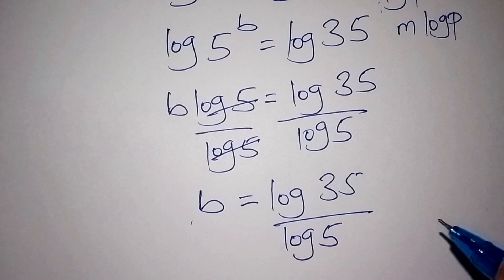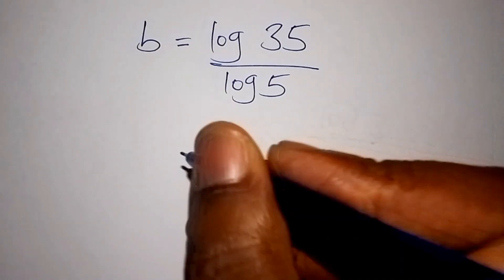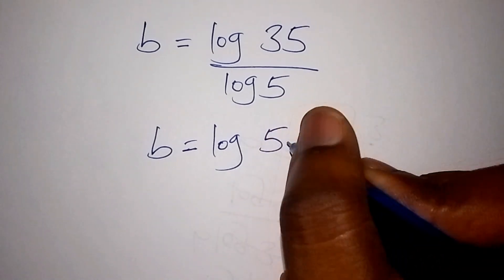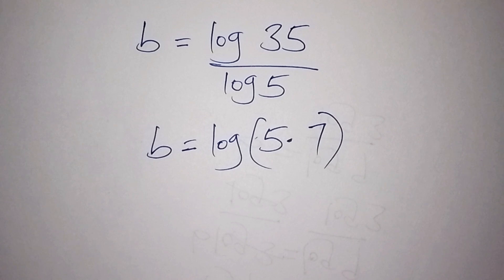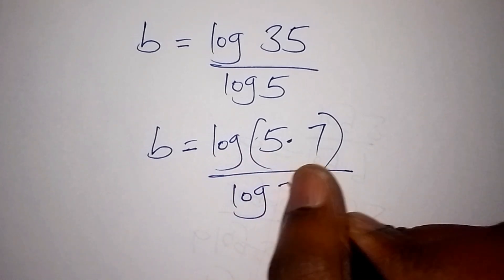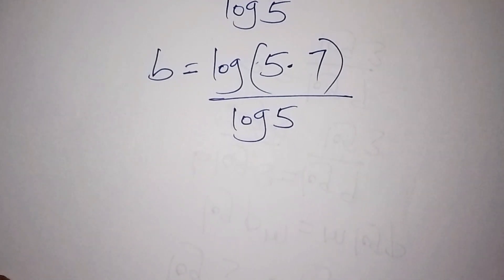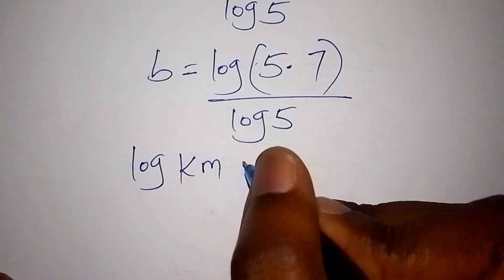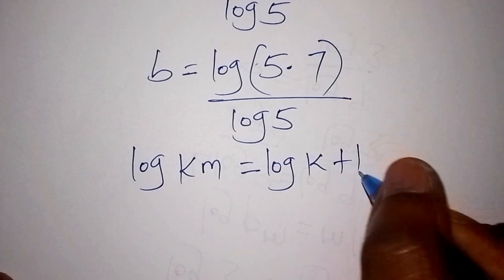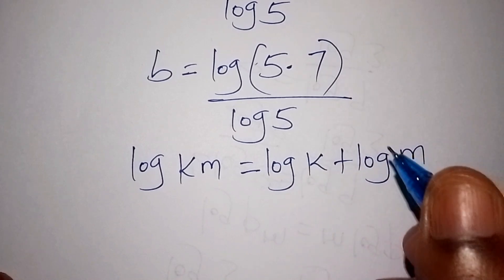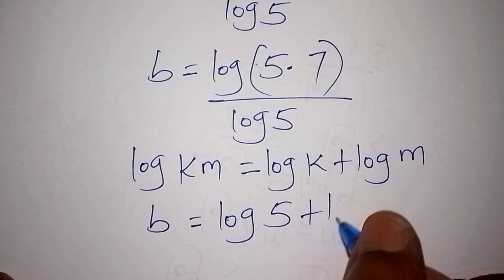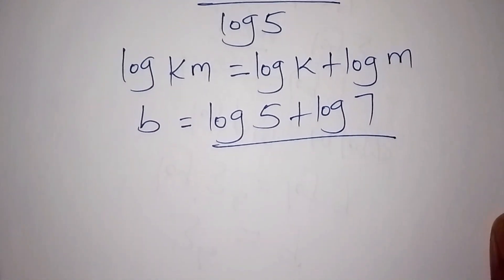We don't stop here because we shall still factorize the log of 35 all over the log of 5. So b can also be written as: when we factorize the log of 35, we shall have the log of 5 multiplied by 7, closed in a bracket, all over the log of 5. We know that the log of k times m can be written as the log of k plus the log of m. So b is equals to the log of 5 plus the log of 7, all over the log of 5.